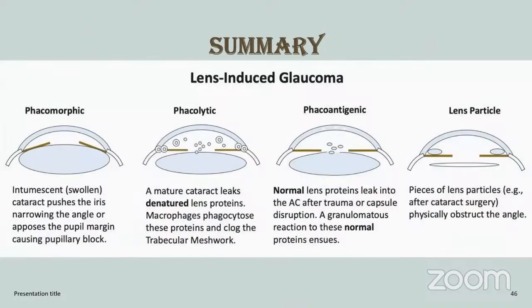Summary: in phacomorphic glaucoma, intumescent cataract pushes the iris, narrowing the angle or causing pupillary block. In phacolytic glaucoma, hypermature cataract leaks denatured lens protein; macrophages phagocytose this protein and clog the trabecular meshwork. In phacoantigenic glaucoma, normal lens protein leaks into the anterior chamber after trauma or capsule disruption, causing a granulomatous reaction. In lens particle glaucoma, pieces of lens material after cataract surgery physically obstruct the trabecular meshwork.